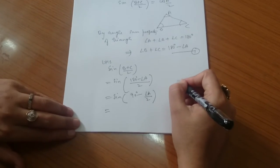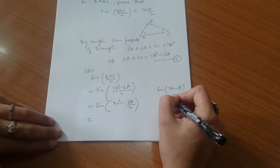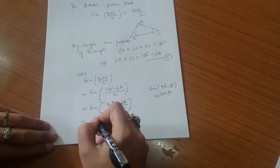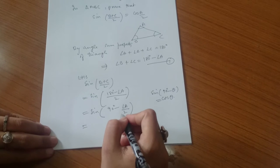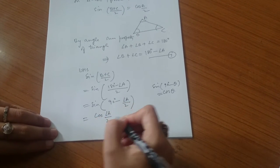We will then use the trigonometric identity sin(90° - θ) equals cos(θ). So, sin(90° - A/2) will be cos(A/2).